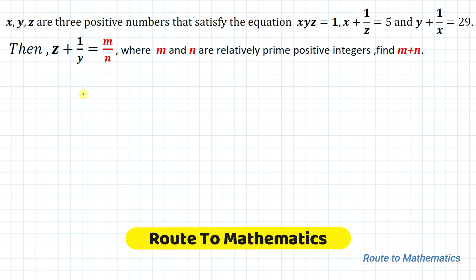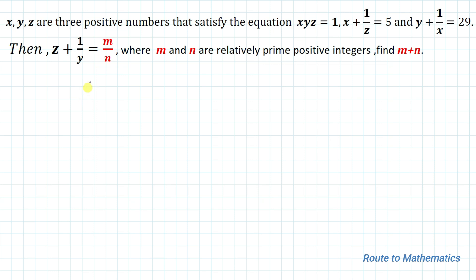Hello everyone, welcome to Root 2 Mathematics. In this video we are going to solve an interesting maths question. The given question is: x, y, z are three positive numbers that satisfy the equation xyz = 1, x + 1/z = 5, and y + 1/x = 29. Then z + 1/y = m/n, where m and n are relatively prime positive integers. Find the value of m + n.